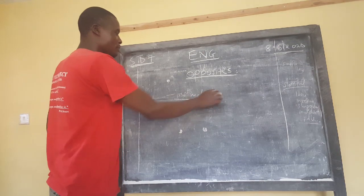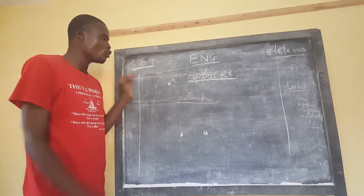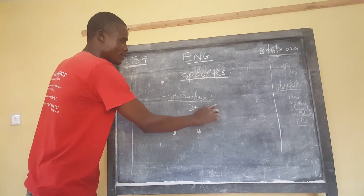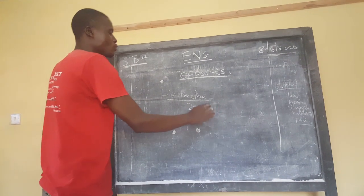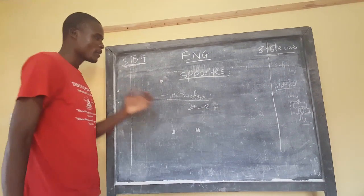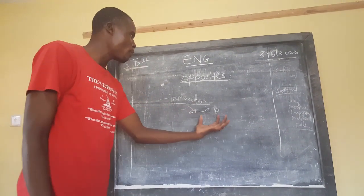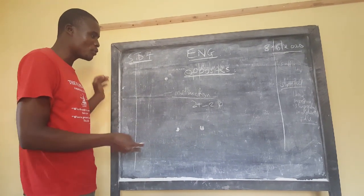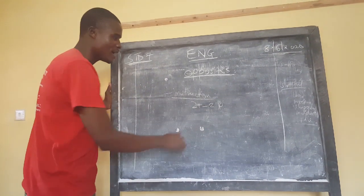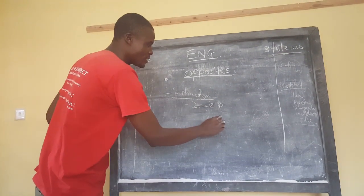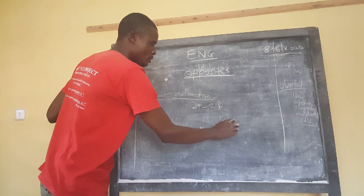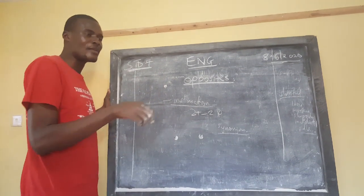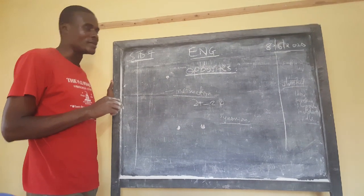For example, for question 21 to 24, the instruction says: give the opposite of the underlined word. But the learner goes without reading the instruction and picks the synonym of the word. The synonym is just the word that means the same as the underlined word.